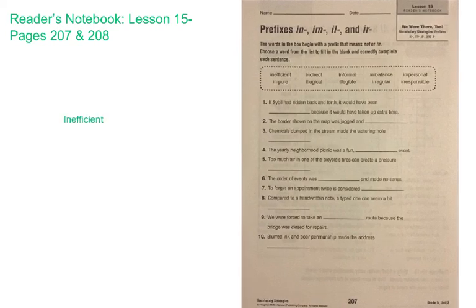The word inefficient, it's a small spot, so instead of trying to write it I'm going to just type it and put it on the line. Number two says the border shown on the map was jagged and blank. I'm going to look up at my words and see what could be jagged. Well, jagged oftentimes can mean irregular. The edge of a puzzle piece might be jagged or irregular. So number two is going to be the word irregular. One of the things that I did not do here is put a line through inefficient, and now I'm going to put a line through irregular. If you want to do that, it makes it a little easier as you keep track because you're only using each of the words in the box one time.